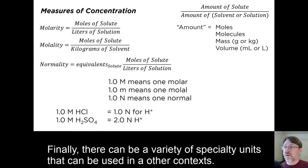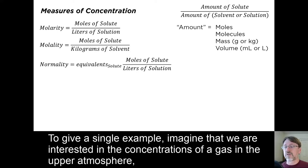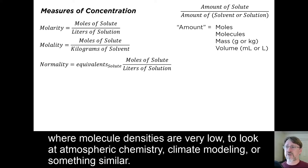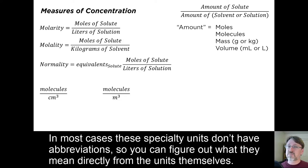Finally, there can be a variety of specialty units that can be used in other contexts. To give a single example, imagine that we are interested in concentrations of a gas in the upper atmosphere, where molecule densities are very low, to look at atmospheric chemistry, climate modeling, or something similar. We might use units like molecules per cubic centimeter, or even molecules per cubic meter. In most cases, these specialty units don't have abbreviations, so you can figure out what they mean directly from the units themselves.